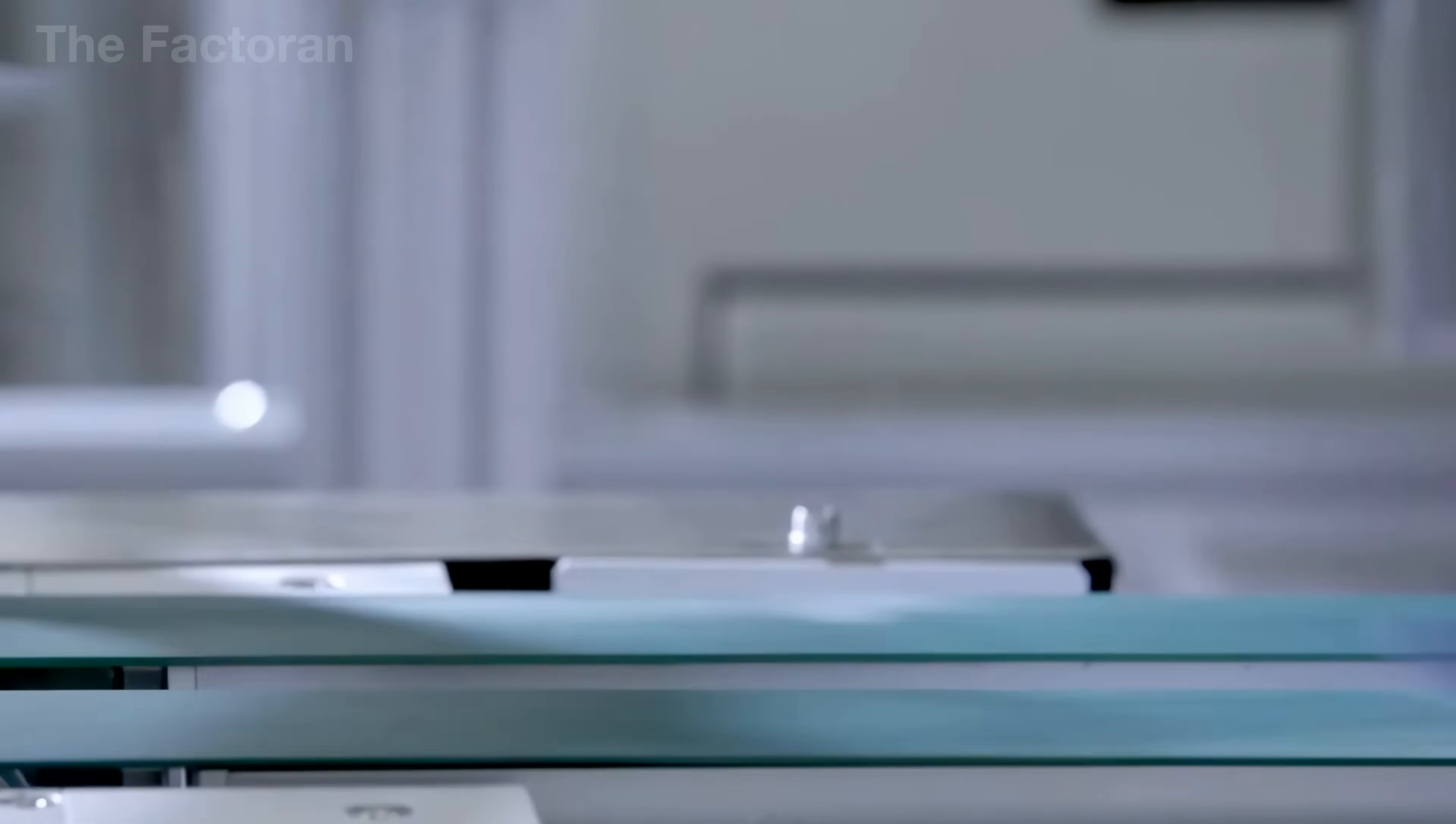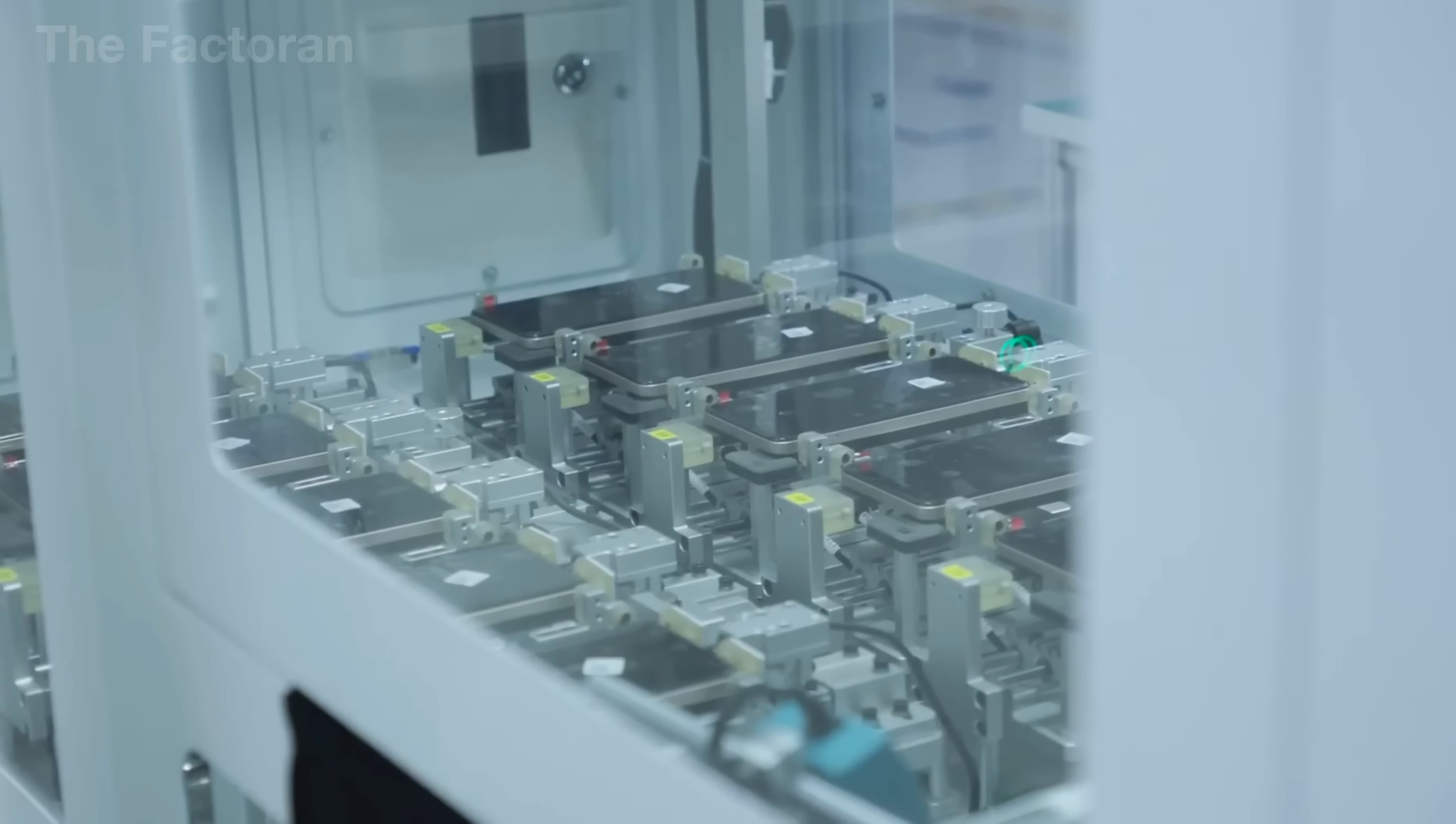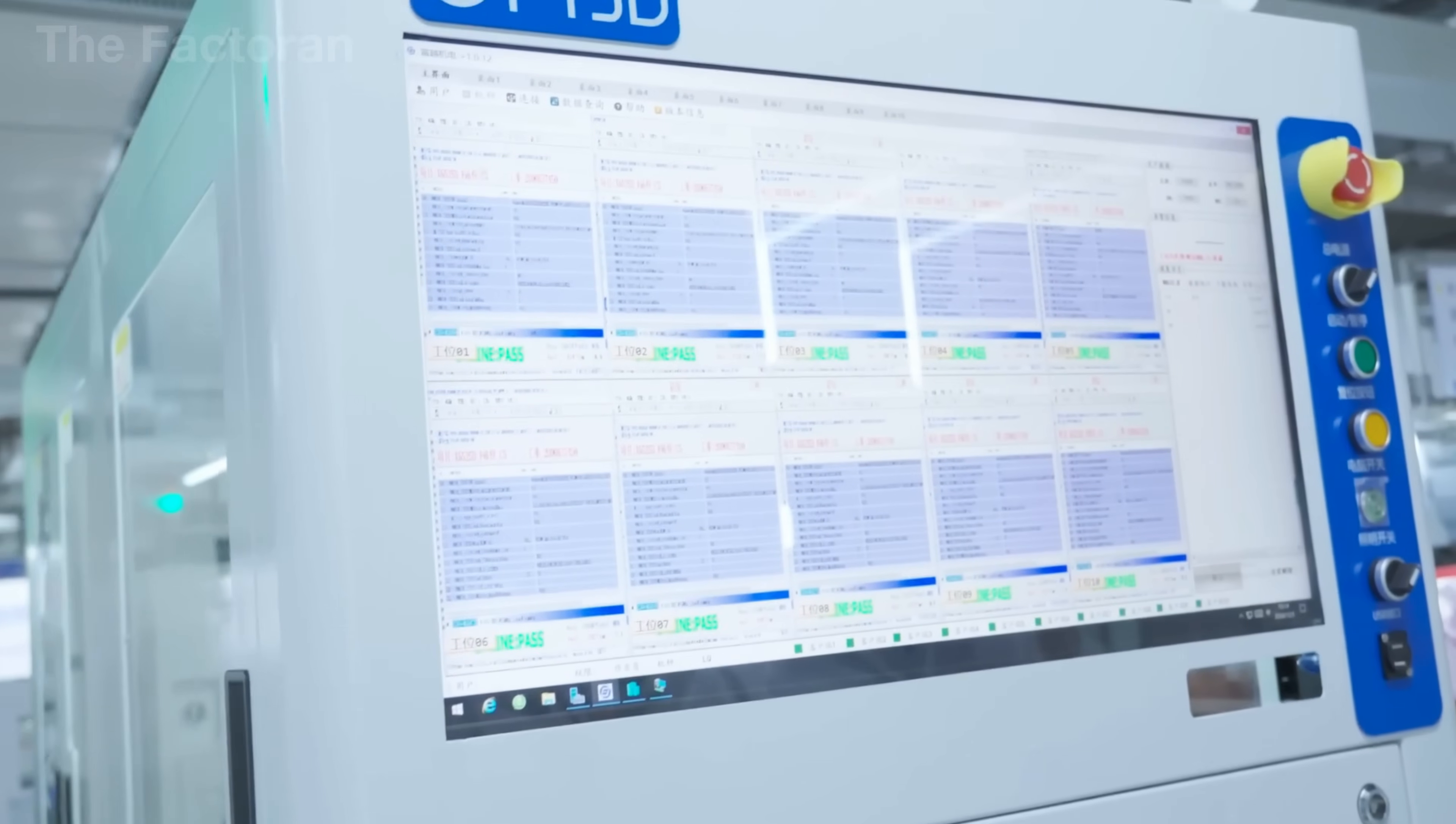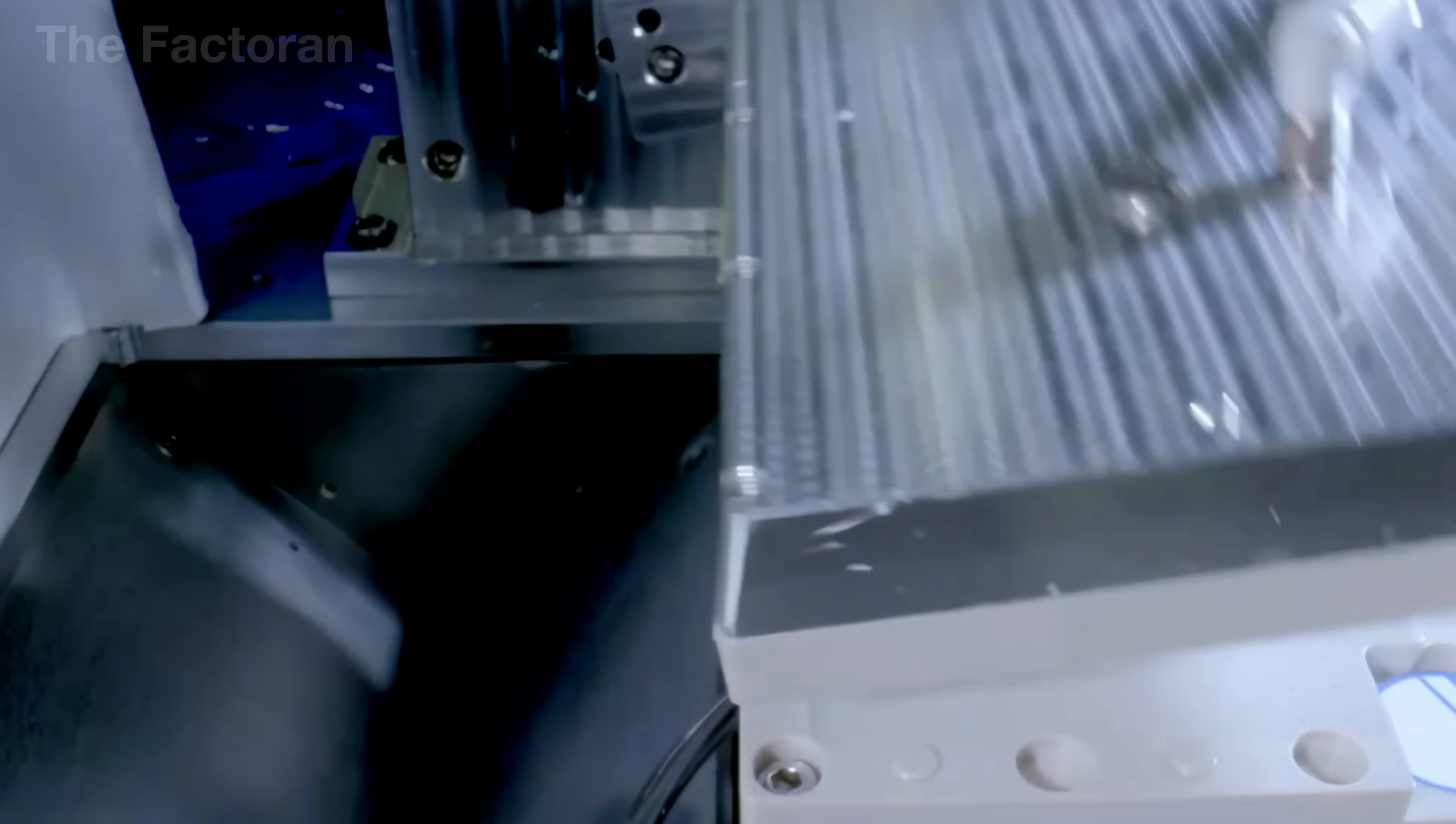After coating, the glass panels pass through a multi-chamber washing system using different cleaning solutions ranging from ultrapure deionized water to ion-removing agents in ultrasonic baths. This process eliminates dust, impurities, and any excess coating. A single remaining particle is enough to discard the entire panel.